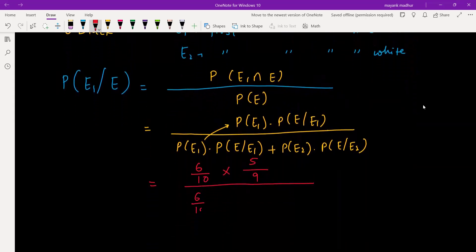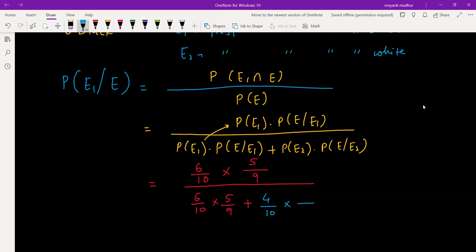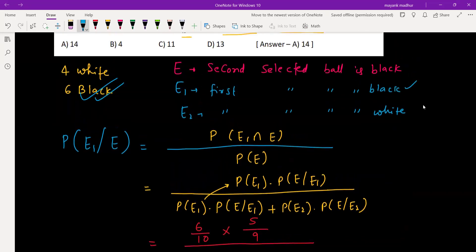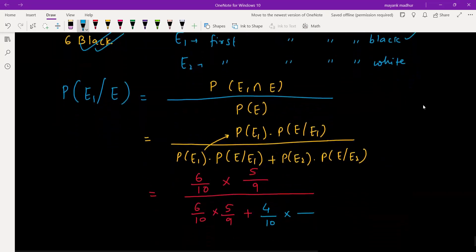Now this case will also come in total, plus. Second is P(E2), means first ball is white, so this is four by ten. Now you have drawn white, this means six blacks you have, so second ball going, so black probability is six by nine.